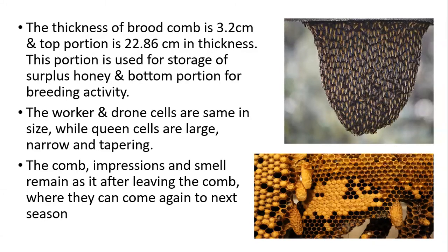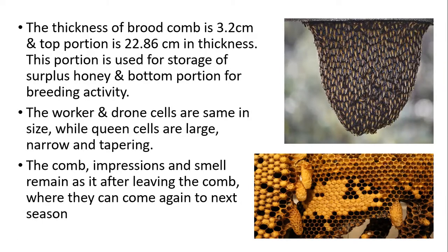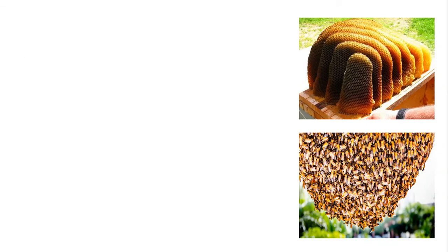Sometimes in Apis dorsata there is absconding, where adult honeybees permanently leave the hive due to unfavorable conditions. However, the impression and smell remain in the comb, so when they return the next season to the same comb, the smell and impression cause them to re-establish their hive there. Next we study Apis indica.